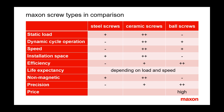On installation space: ball screw nuts cannot be made very small, so a smaller ceramic spindle might be a good alternative solution. Ceramic screws also have a high load capacity. On efficiency: ball screws are clearly the best, followed by the ceramic ones.